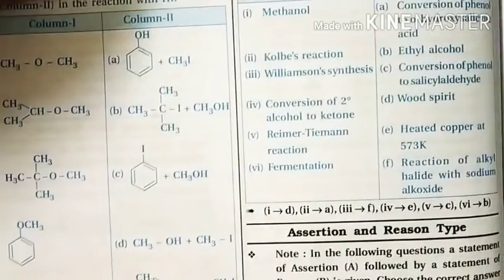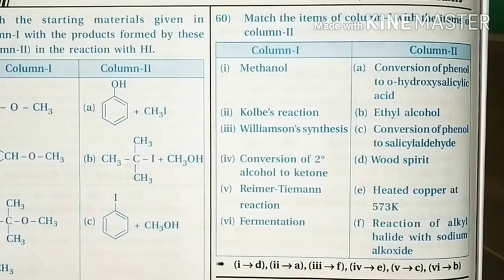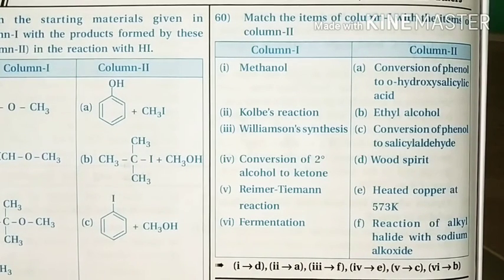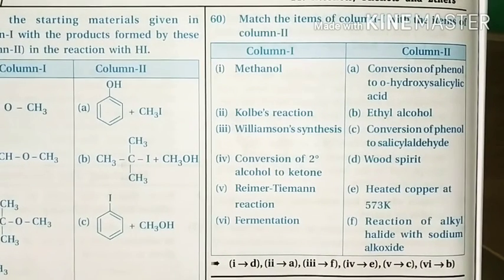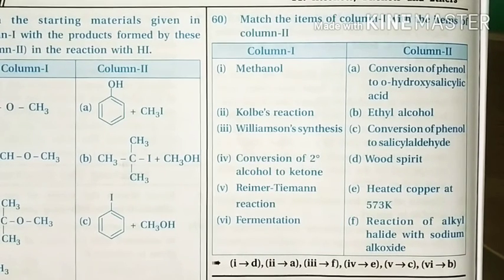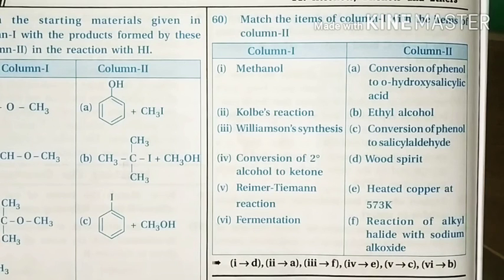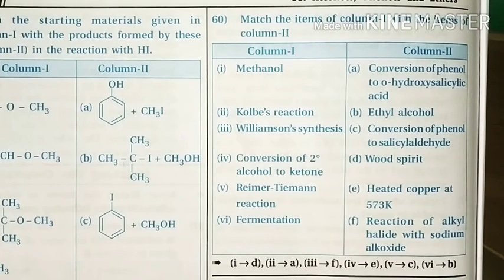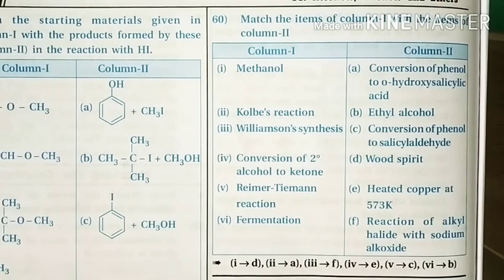Question 60: Match the items. Methanol — wood spirit. Kolbe reaction — manufacture of salicylic acid, i.e., conversion of phenol to ortho-hydroxy salicylic acid. Williamson synthesis — reaction of alkyl halide with sodium alkoxide. Conversion of secondary alcohol to ketone — heated copper at 573K. Reimer-Tiemann reaction — manufacture of salicylaldehyde from phenol. Fermentation — for ethyl alcohol. Today we stop here.